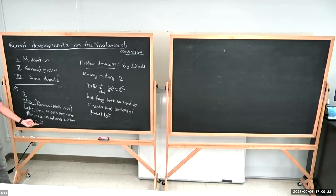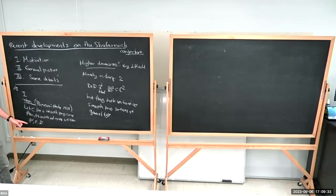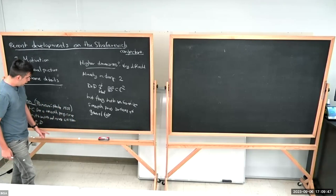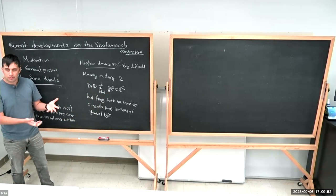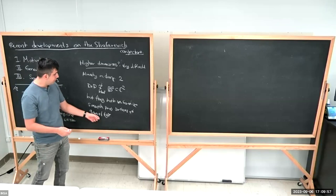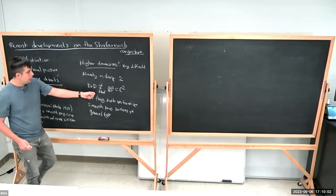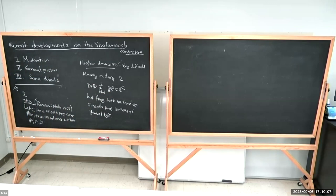For Riemann surfaces: genus zero corresponds to P1, genus one to C, and genus bigger than one — general type — is uniformized by D. In higher dimensions, general type contains a lot of varieties, they are very wild and difficult to study. It is in some sense hopeless to classify the universal covers in higher dimension.